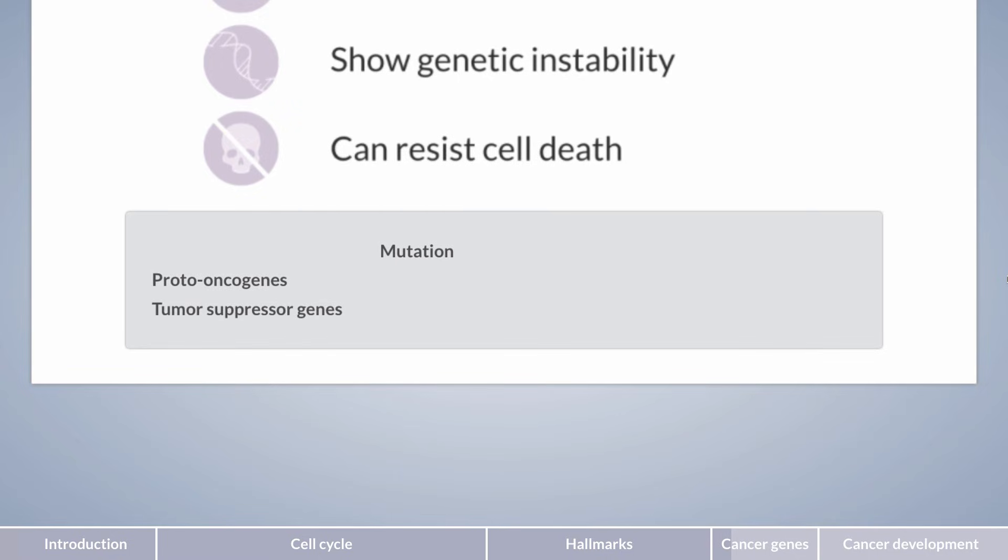Proto-oncogenes are genes whose uncontrolled activation contributes to tumor formation. If the gene is mutated, it is called an oncogene, and cell division is facilitated. Oncogenes are, for example, involved in transmitting growth signals, such as the receptor for the human epidermal growth factor, HER2NU.